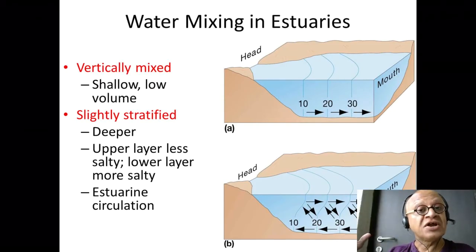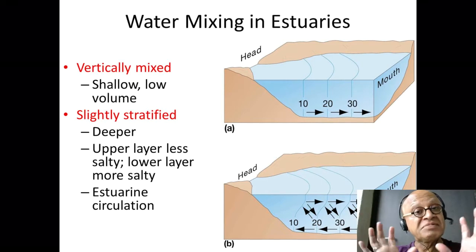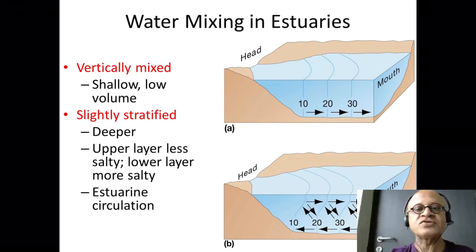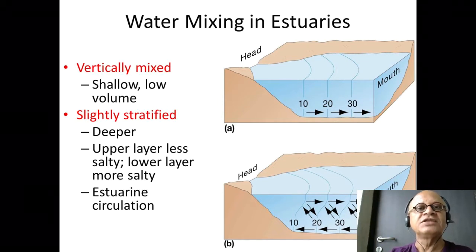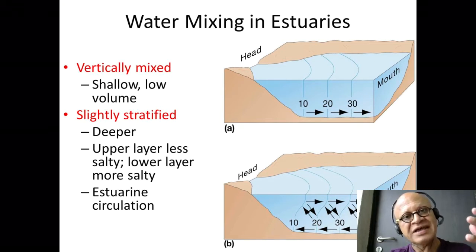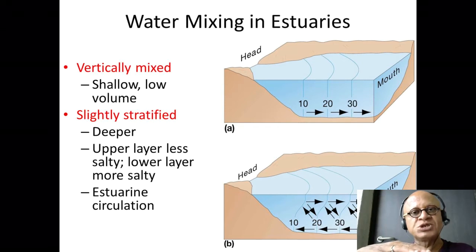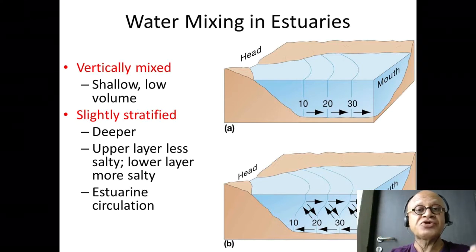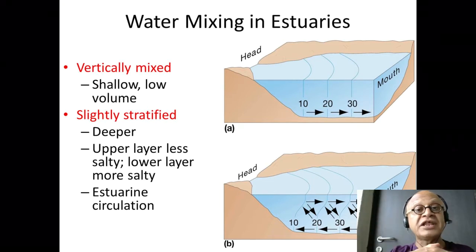Estuaries are basically semi-enclosed — they have ocean water coming in and fresh water coming in. They could also be evaporative estuaries. This means there is a mixing issue involved, which broadly depends on the volume of water coming in and the depth of the estuary, creating the relative densities of the surface and deeper waters. The normal estuarine flow is that heavier marine water flows in at the bottom.